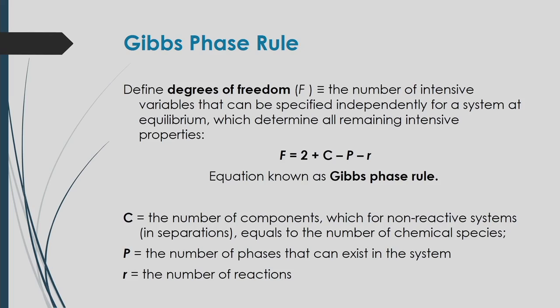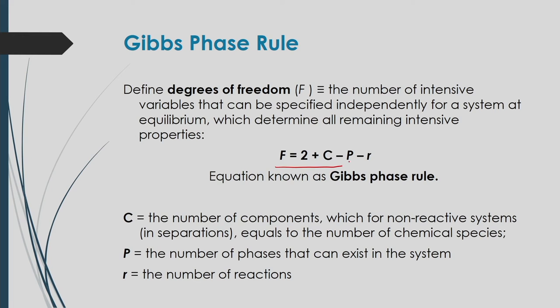The Gibbs phase rule equation is: f = 2 + c − p − r, where f is degrees of freedom, c is the number of components (species) in the system, p is the number of phases, and r is the number of reactions occurring in the system. Using this, you can calculate the degrees of freedom and specify the system variables to represent its properties.